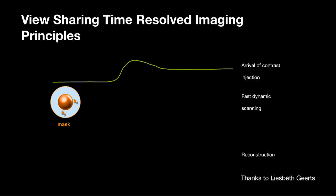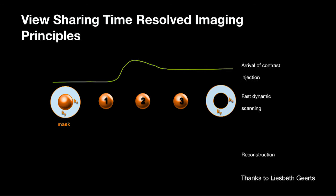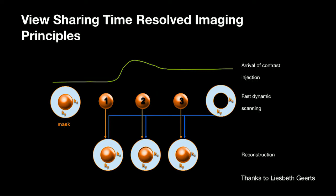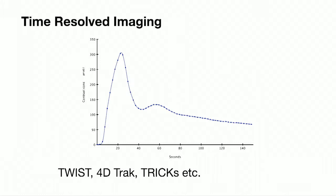Since then we've moved to view-sharing techniques. Philips' version, marketed as 4D Track, takes a mask image with the whole of K-space, then updates the centre of K-space, and at the end takes one disc of the edge of K-space which is shared with all the other parts, giving multiple reconstructions with both centre and peripheral K-space dynamically. This gives multiple fast, temporally-resolved images through the contrast passage from early arterial through peak arterial and out into venous.